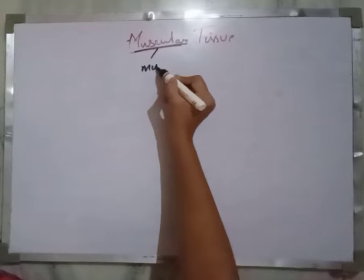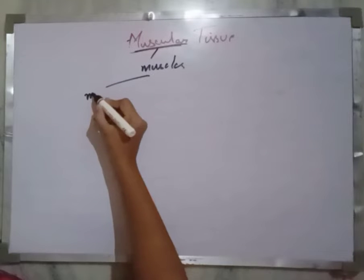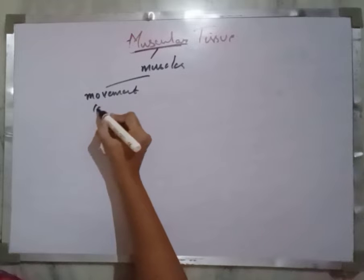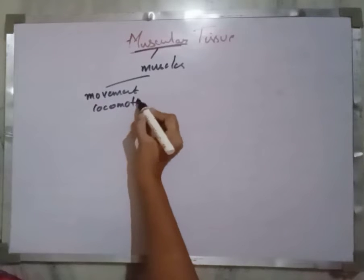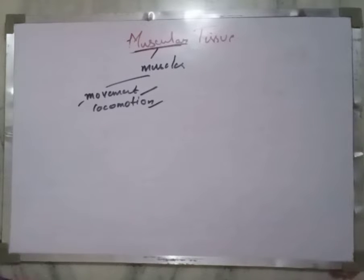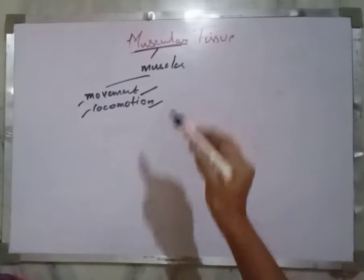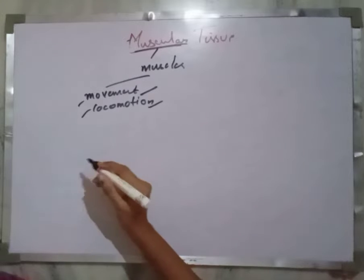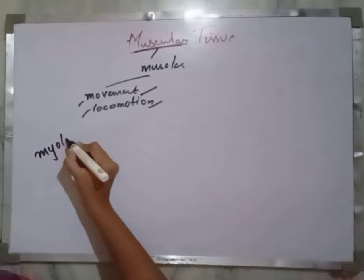Welcome back to my channel. In today's video we are going to discuss about the muscular tissue. This is the third type of animal tissue and as the name indicates this tissue is made up of muscles. These muscles are useful for movement and locomotion. Movement means moving a particular part, whereas locomotion means moving from one place to another place.